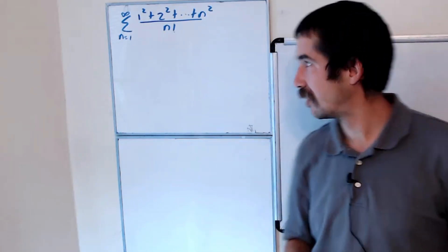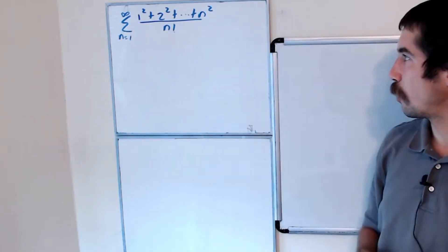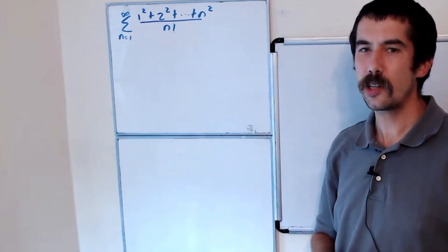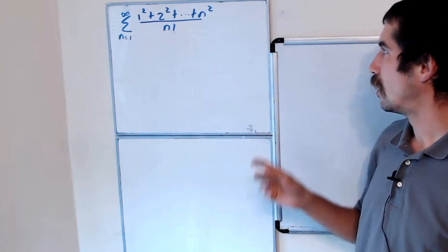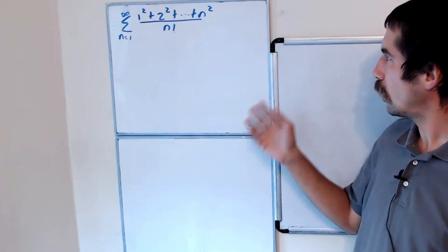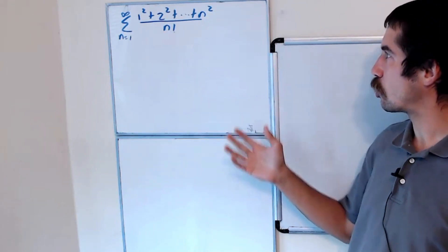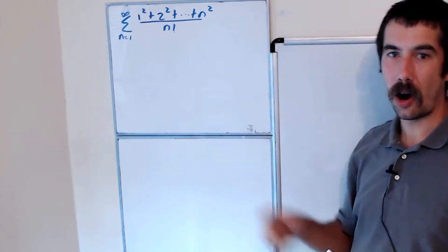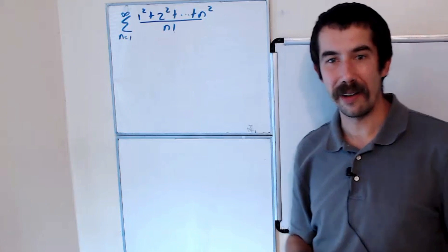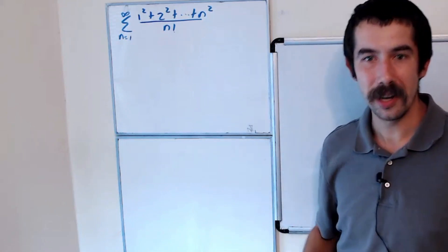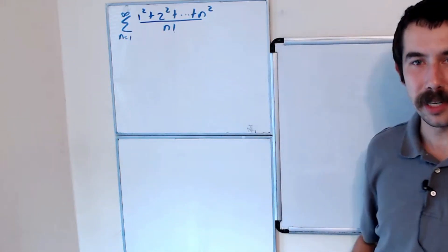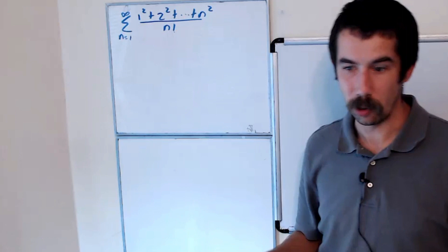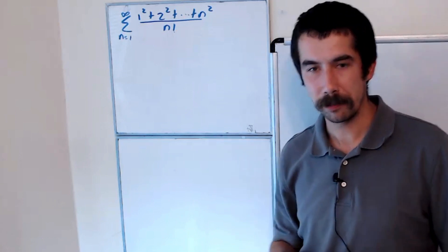Let's do a series today. Let's evaluate the sum from n equals 1 to infinity of 1 squared plus 2 squared plus all the way up to n squared, all over n factorial. Try it on your own and let me know in the comments if you're able to solve it, or you can just watch me solve it.